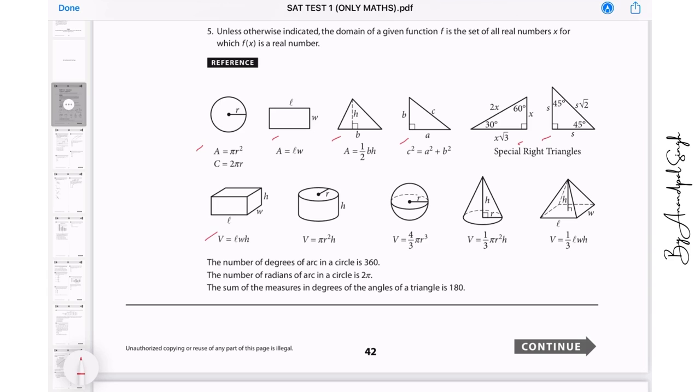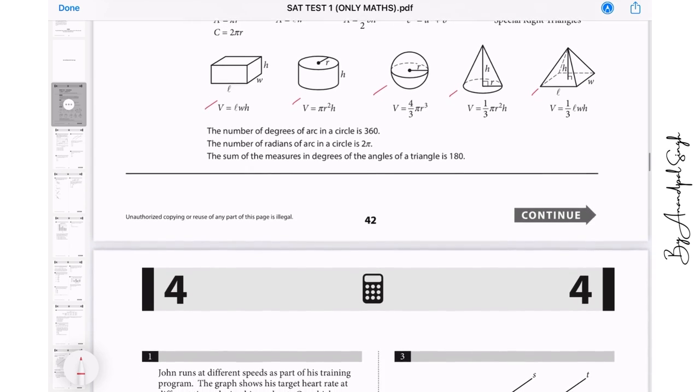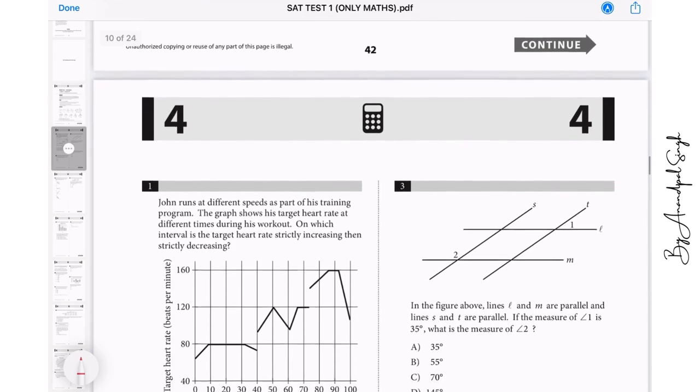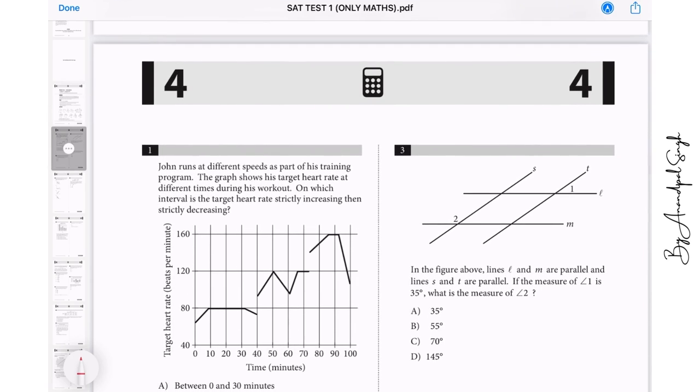Volume of cube, cuboid, cylinder, sphere, cone and a pyramid and about the radian and degree measures. See these three angles and property of a triangle. So we can use whenever it is required this information is given at the beginning of every SAT paper. So let us start with question number one.